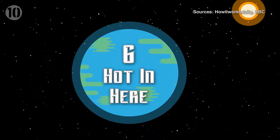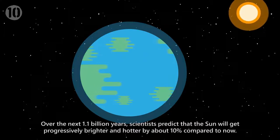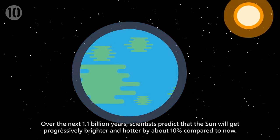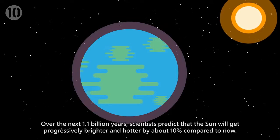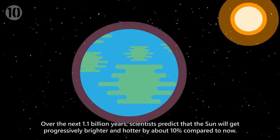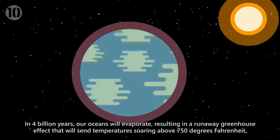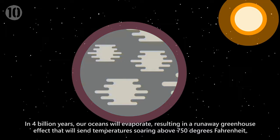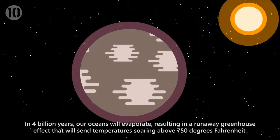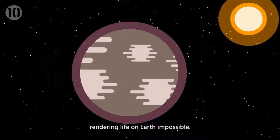Number 6: Hot in Here. Over the next 1.1 billion years, scientists predict that the Sun will get progressively brighter and hotter by about 10% compared to now. In 4 billion years, our oceans will evaporate, resulting in a runaway greenhouse effect that will send temperatures soaring above 750 degrees Fahrenheit, rendering life on Earth impossible.